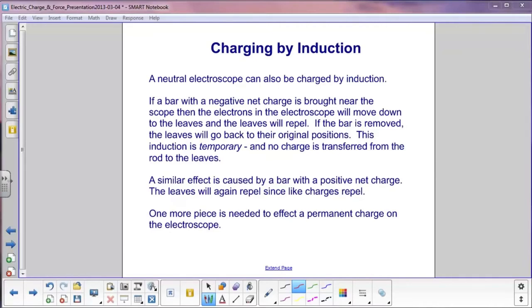So this inductive effect is temporary. No charge is transferred from the rod to the leaves because, again, electrons cannot jump across the air gap. You could see a similar thing with a rod with positive net charge. Same exact thing will happen. You push it near the electroscope. The leaves will spread apart. You pull it away. The leaves will close.